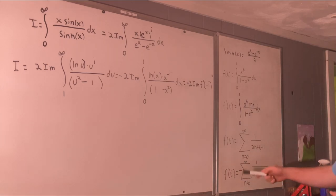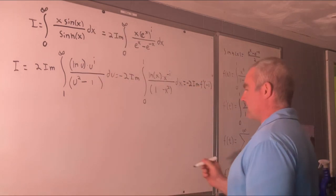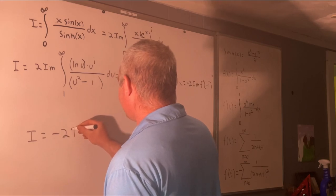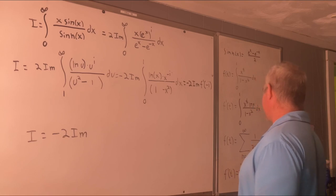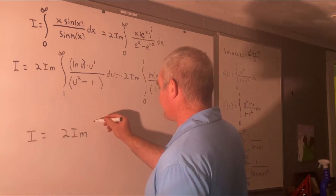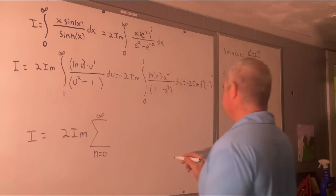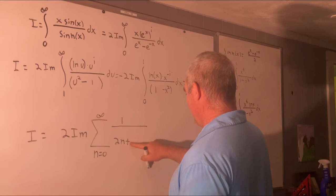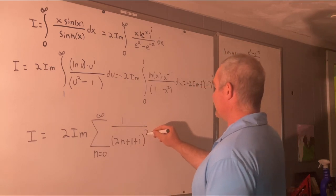So now what we do is multiply F'(t) by negative two, evaluate at t = negative i, and take the imaginary part to get the value of our original integral. I equals negative two times the imaginary part of F'(-i). Since F'(t) already has a negative, those cancel, giving us the sum as n goes from zero to infinity of one over (2n + 1 + i) all squared.